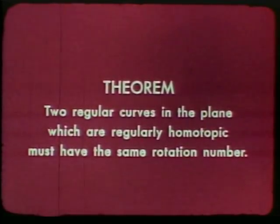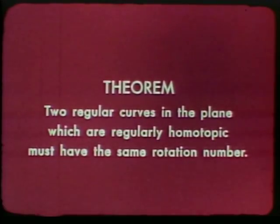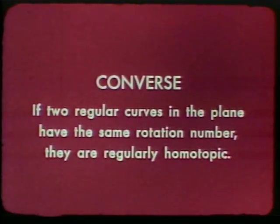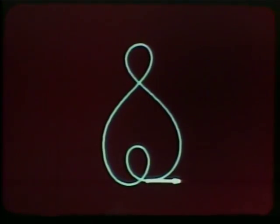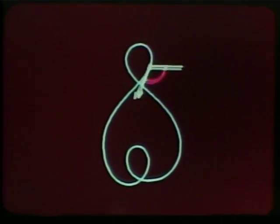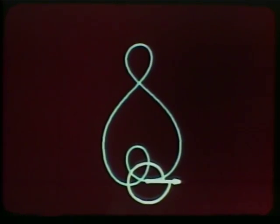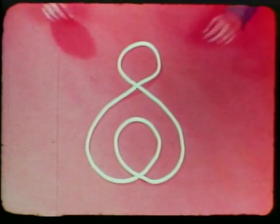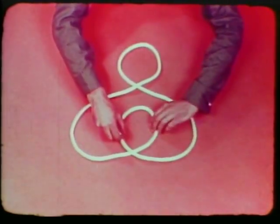We proved that regularly homotopic curves have the same rotation number. What about the converse? If two regular curves have the same rotation number, is there always a regular homotopy between them? The answer is yes, as will be proved in part two. For example, this curve has rotation number one, the same as a circle. Can you find a regular homotopy between this curve and a circle? Take a loop of string and move it around on a table — remember, no lifting out of the plane, no breaks, no jumps, and no kinks.